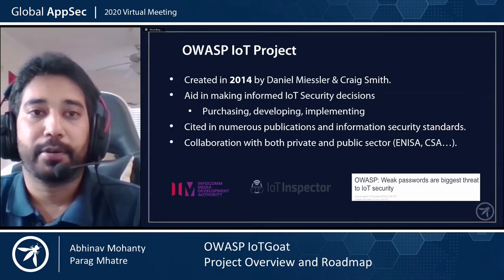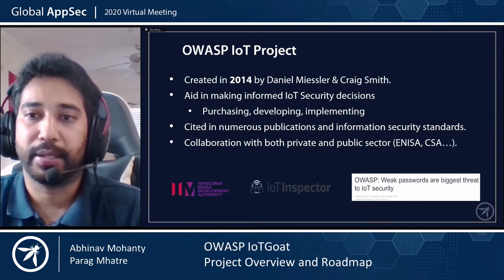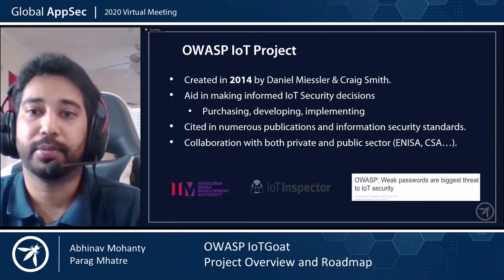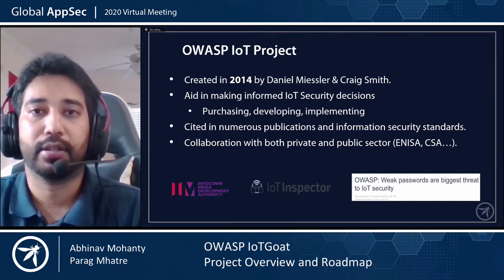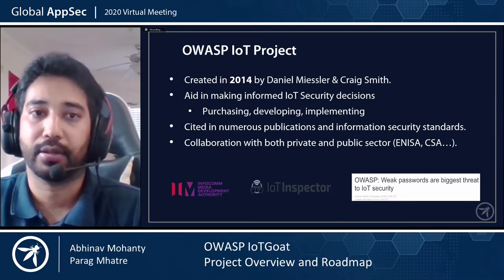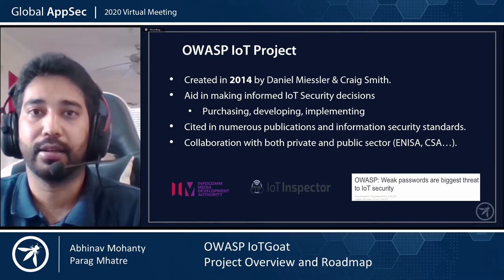The OWASP IoT project was started in 2014 by Daniel Measler and Craig Smith with the goal to help manufacturers, developers and consumers better understand the security issues associated with the Internet of Things and to enable users in any context to make better security decisions when building, deploying, assessing or buying IoT technology. The OWASP IoT project has a number of sub-projects and they have been cited in numerous publications and information security standards globally.